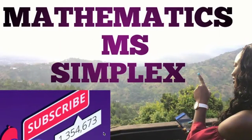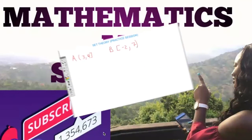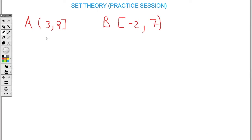Welcome back to my channel. My name is Trisha Morris and today we'll be doing set theory — this is a practice section, a continuation of the last video. Let's get into this activity. We have set A where it's open at 3 and closed at 9. We also have set B where it's closed at negative 2 and open at 7. Remember, a square bracket means it's closed while a curved bracket means it's open.